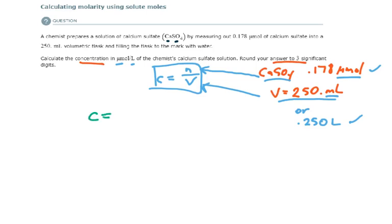So, concentration of the solution is equal to the amount of solute in micromoles, which is 0.178 micromoles of our solute, which is calcium sulfate, divided by the total volume of the solution in liters, which is 0.25 liters.